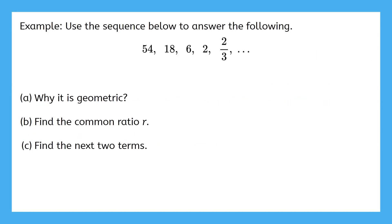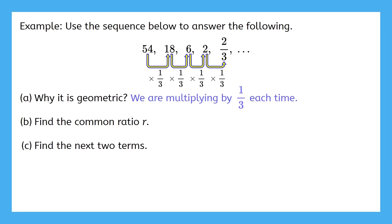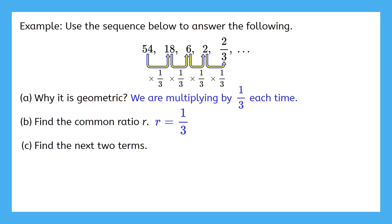Let's do an example. Use the sequence below to answer the following. First, why is it geometric? What's the pattern this time? If you notice that we're dividing by 3, that's right. However, we usually think of geometric sequences as multiplication, so instead of dividing by 3, we'll look at this as multiplication by 1 third. For this reason, we have a geometric sequence. Now, what's the common ratio? Remember, the common ratio is the number being multiplied, so we get r equals 1 third. Finally, let's find the next two terms of the sequence by continuing to multiply. Pause the video and find them.